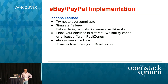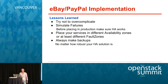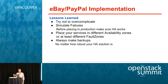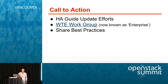Lessons learned from our HA implementations: generally, try not to over-complicate things — the simplest solutions work better than more complicated ones. Simulate failures, because a lack of failure simulation is why we've had these failures. If possible, place your services in different availability zones, or at least in different fault zones, different racks, and different networks. Always make backups, for example in the case of MySQL.